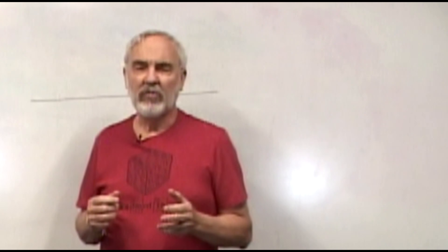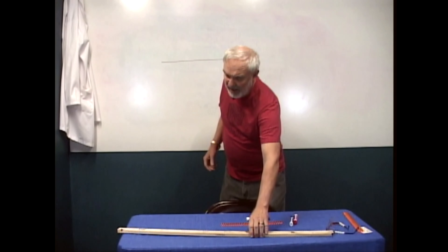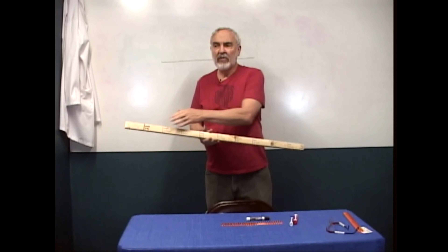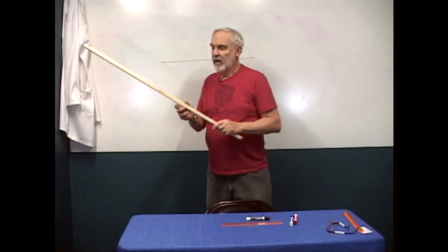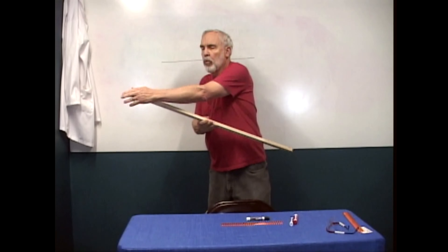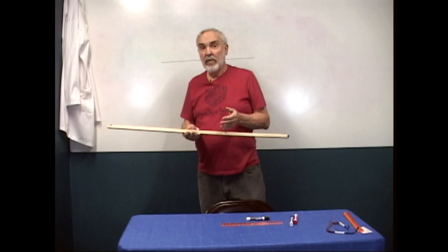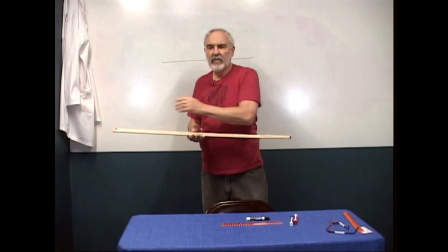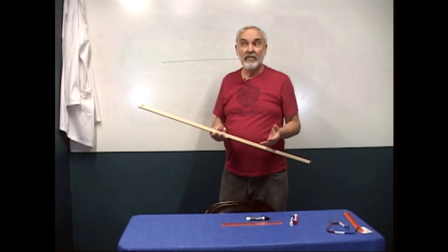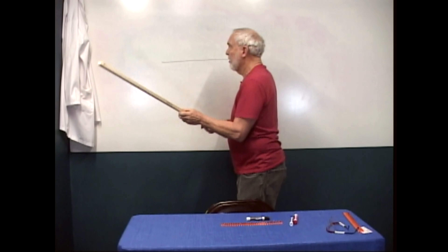Using Galileo's dictum, we can take a ruler — some standard — and say this is how I'm going to measure it. This is my meter stick; it's one meter long. It could be a step, the Egyptians used a cubit, or it could be a yard. But I'll show you later on why we use a meter stick.